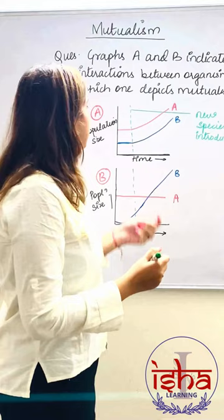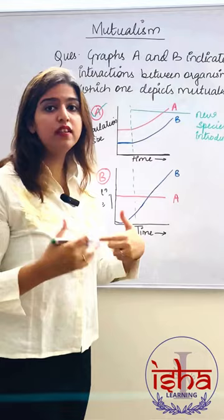That is evident in graph A. Population A and B both increase in size after the new species is introduced.